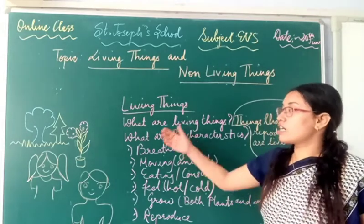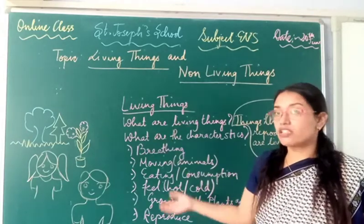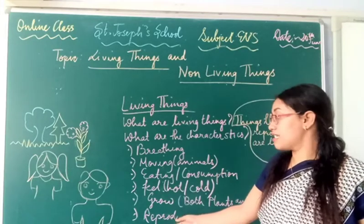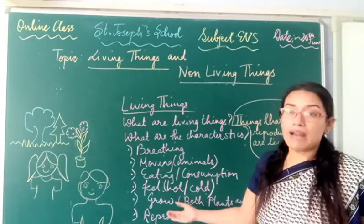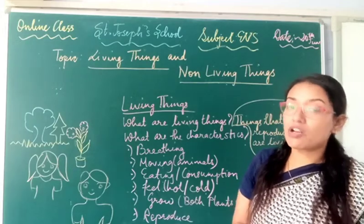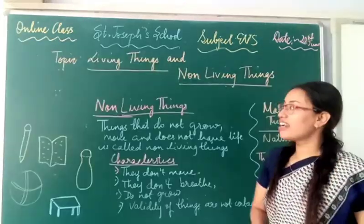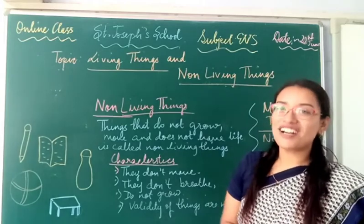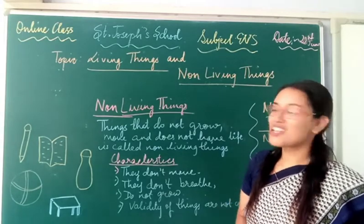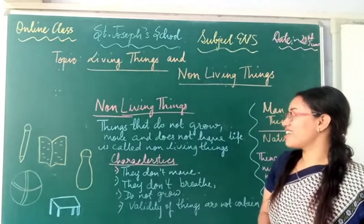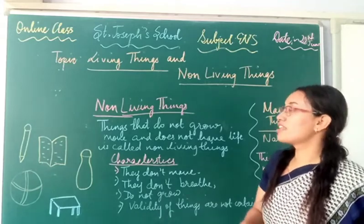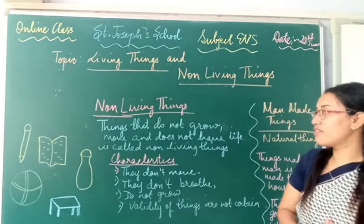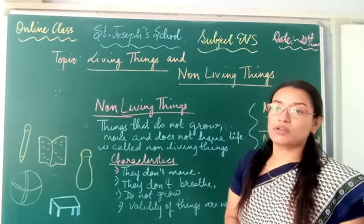We have already studied the major characteristics of living things. Now we are going to study about non-living things. What are non-living things? Non-living things are things that do not grow, do not move, and do not have life. They are called non-living things.